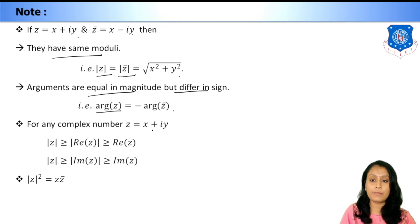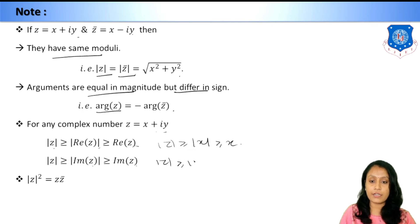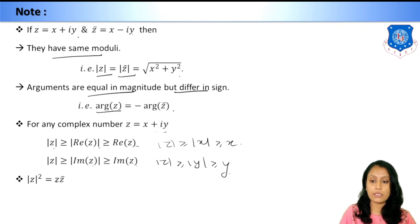For any complex number z = x + iy: |z| ≥ |Re(z)| ≥ Re(z), meaning |z| ≥ |x| ≥ x; and |z| ≥ |Im(z)| ≥ Im(z), meaning |z| ≥ |y| ≥ y. Also, |z|² = z·z̄. These are a few properties to remember.